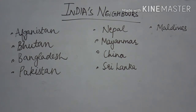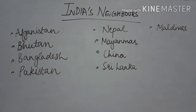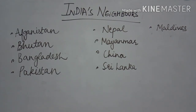Right now, India has 28 states and 8 union territories. With this, our chapter on India's Size and Location is complete, covering all the major topics. Thank you for watching — see you in the next video.